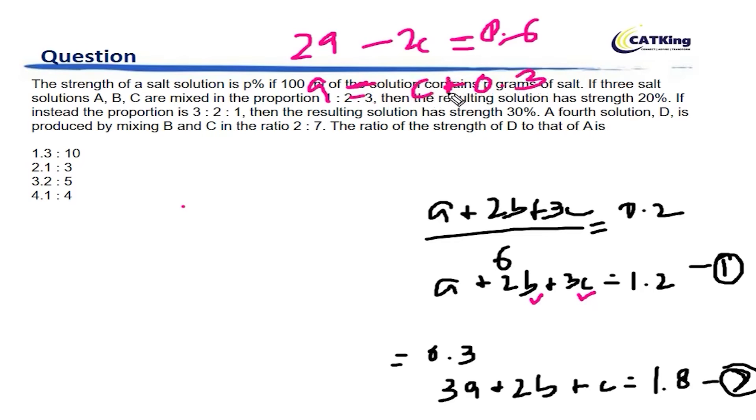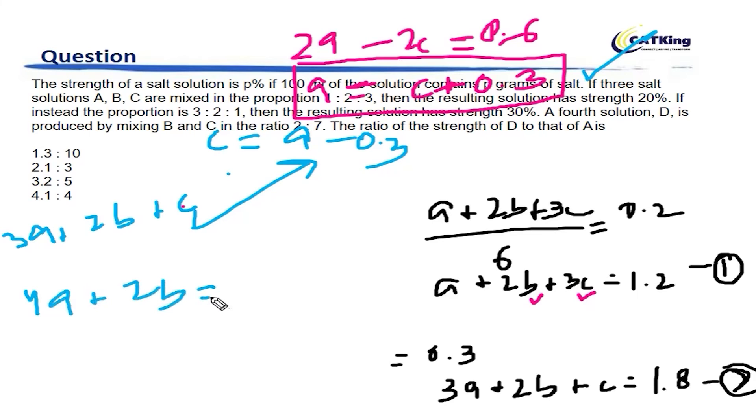See that A becomes equal to C plus 0.3. Now you can put it here. This becomes 3A plus 2B plus C. A is equal to C plus 0.3 and C is equal to A minus 0.3. If you put C is equal to A minus 0.3, this becomes 4A plus 2B is equal to 2.1. Similarly, we have to find out B. B becomes 1.05 minus 2A. So that is B for you.